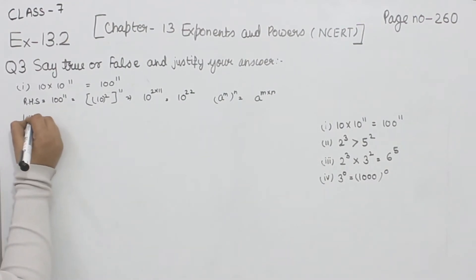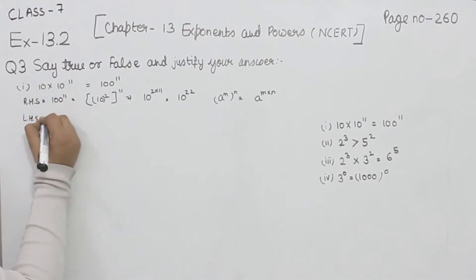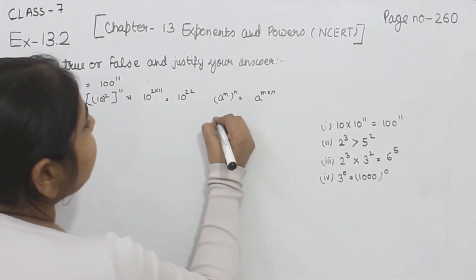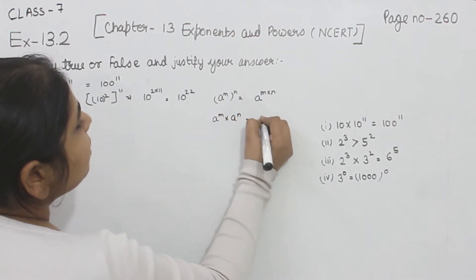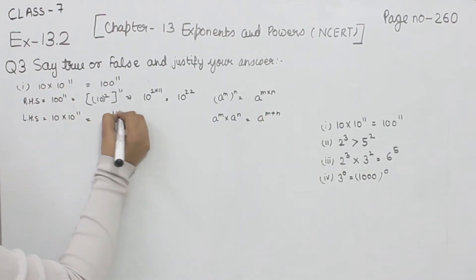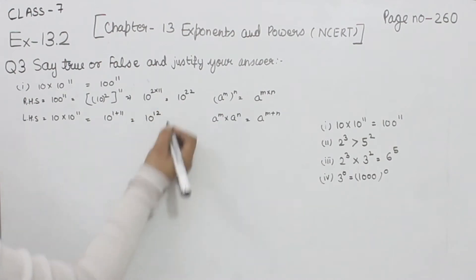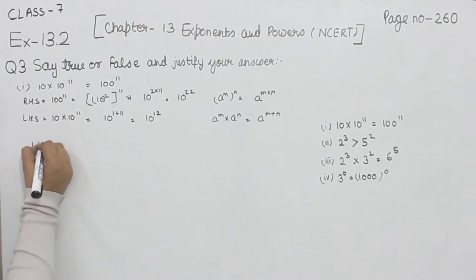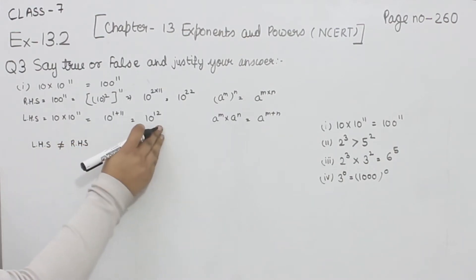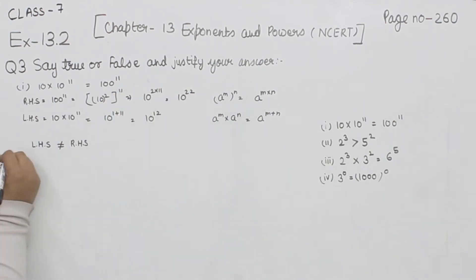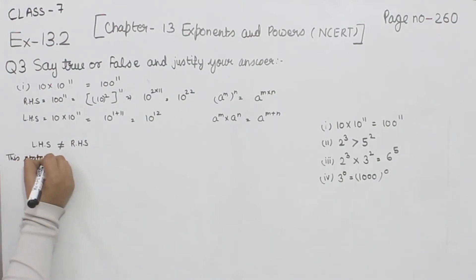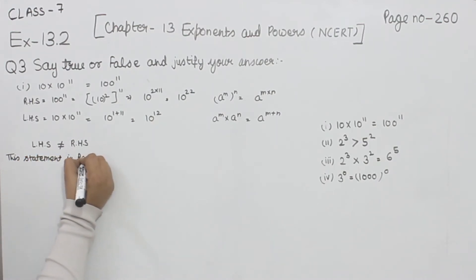Now for the left hand side, we have 10 multiplied by 10 to the power 11. Applying the rule a^m × a^n = a^(m+n), we get 10 to the power 1 plus 11, which is 10 to the power 12. So left hand side is not equal to right hand side — LHS is 10^12 and RHS is 10^22. Therefore this statement is false.